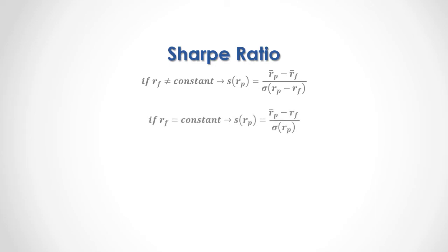If the risk-free rate of return is constant through time, then the portfolio return Sharpe Ratio equals, within the numerator, the portfolio returns mean minus that constant risk-free rate of return, which is then divided by the portfolio returns standard deviation. And last, if for simplicity purposes we assume a 0% risk-free rate, then the portfolio returns Sharpe Ratio equals the portfolio returns mean divided by the portfolio returns standard deviation.